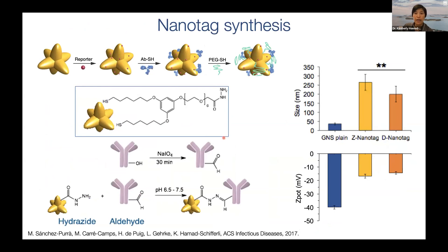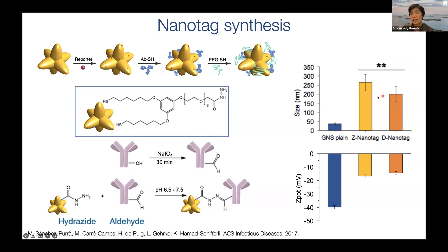Our nanotag is the nanostar with the Raman reporter and the antibody. We incubate the nanostar with the Raman reporter first — it decorates the surface by physical adsorption in the case of BPE, or by thiol conjugation in the case of 4-MBA. Then we link it to our antibody using a dithiol linker with a hydrazide end on the nanostar, and we functionalize the antibody by reacting with sodium periodate to form aldehydes concentrated in the anti-Fc region, far from the antigen-binding site. These react together to form a conjugated bond by click chemistry. We confirm nanotag formation by DLS size increase, zeta potential change, and PEG backfill with thiolated PEG to passivate open surfaces and prevent nonspecific adsorption.